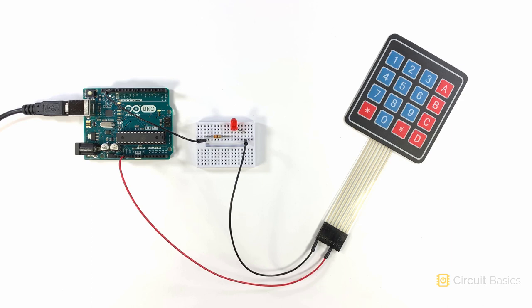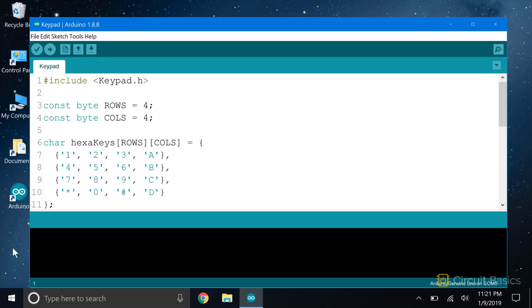Now let's see how we can get the keypad to print key values to the serial monitor. We're going to be using the keypad library by Mark Stanley and Alexander Brevig. This library takes care of polling all the different columns and rows, and also handles switch debouncing.